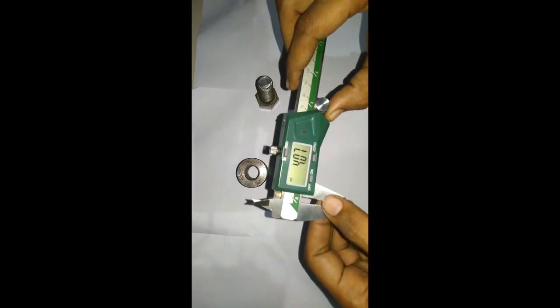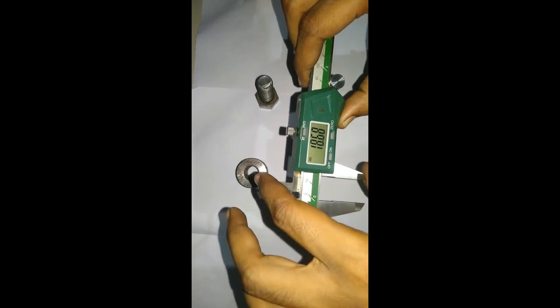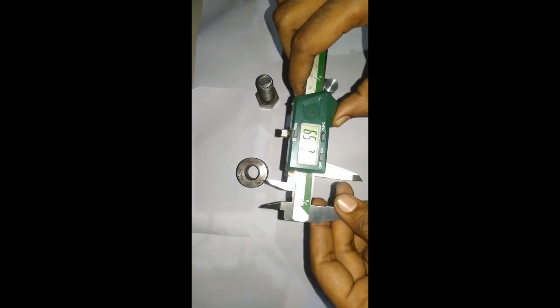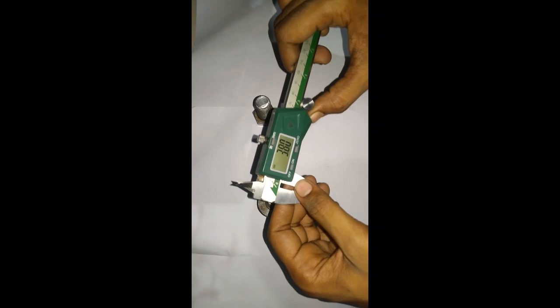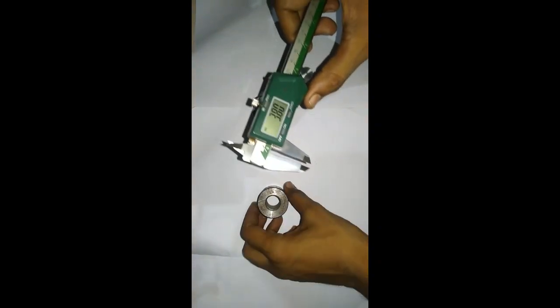And these are both the JAWS. First one is the Fixed JAWS. Another one is the Movable JAWS. Here you can see. In this instrument, these JAWS are used for external measurements and these JAWS are used for internal measurement.